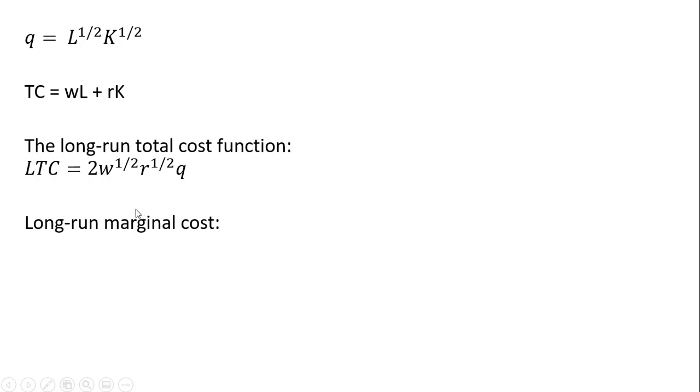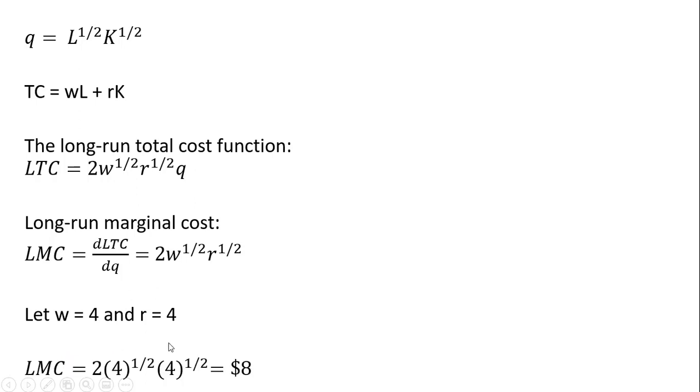To get the long-run marginal cost function, we're going to take the derivative of the long-run total cost function, and you get the following. It's just going to be a constant. So if we let W equal 4 and R equal 4, I could have picked any values here, we get long-run marginal cost constant at $8. And this is because we have constant returns to scale.